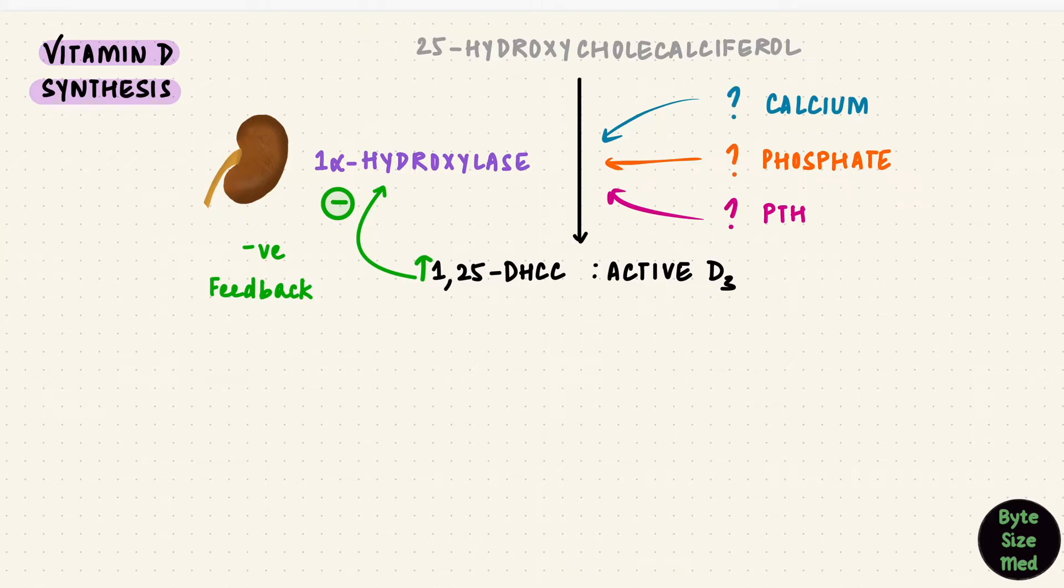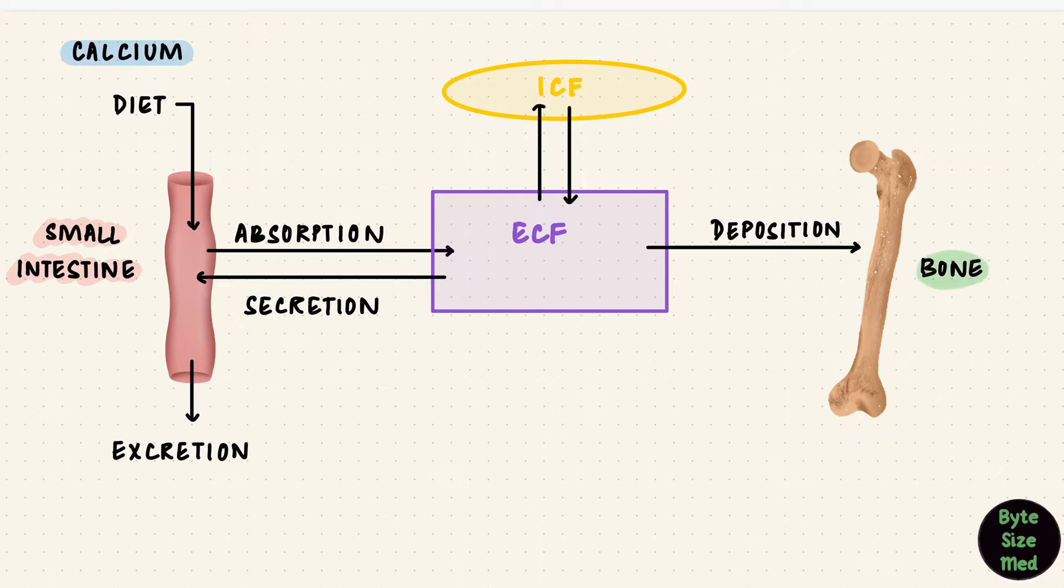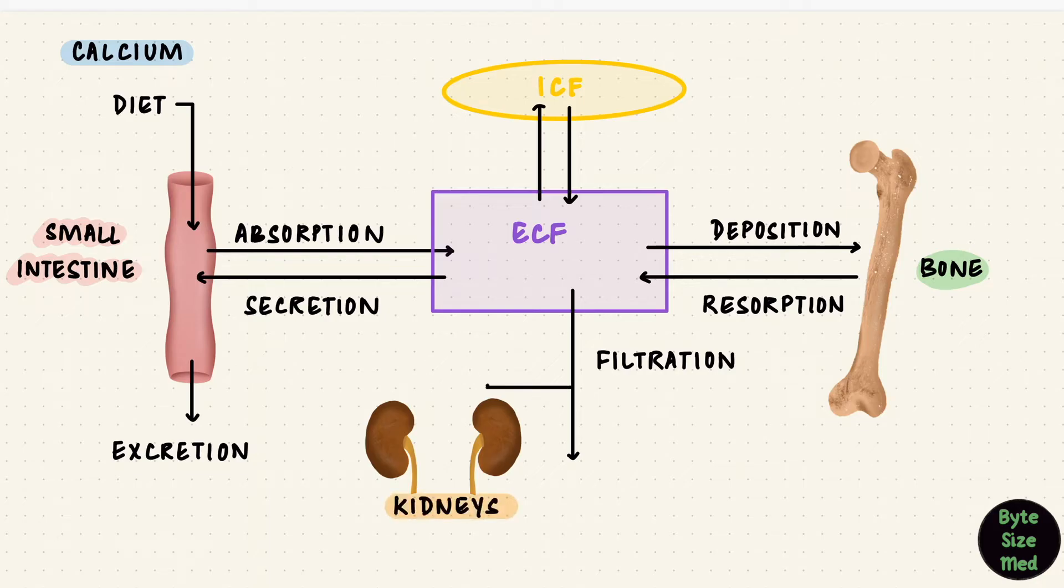But how would these three regulate this enzyme? For that, we'll see what vitamin D does in the body. To understand that, we need calcium. Calcium is taken in through diet. It reaches the small intestine where it gets absorbed into the extracellular fluid. It also gets secreted in GI fluids and the GI system is its main mode of excretion. From the ECF, calcium can exchange with cells, entering them and leaving them to perform its functions. Calcium gets deposited in bones and bones serve as a reservoir, and by resorption, calcium can be removed from bones and put back into the ECF. A lot of that calcium also gets filtered by the kidneys, but most of it gets reabsorbed, leaving behind a very small amount to be excreted in the urine.